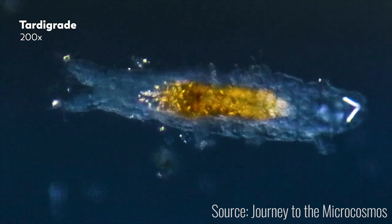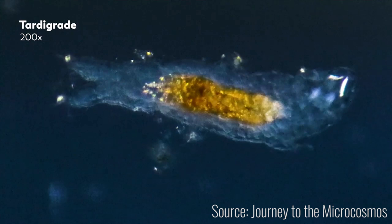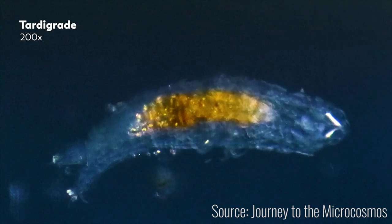The tardigrades are oviporous and undergo direct development without larval phases. They lack circulatory and respiratory systems. They do have nervous, excretory, and reproductive systems.